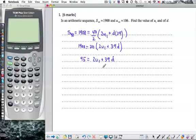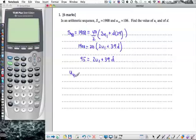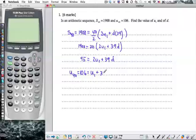So 95 equals 2u1 plus 39d. So there's my first equation from that first bit of information. Let's make another equation with the u40 is 106. So u sub 40 is 106. And that says that we had a u1 plus 39d's.